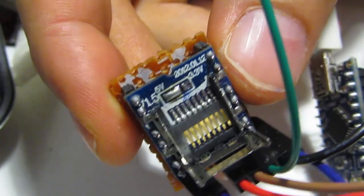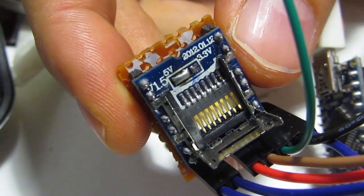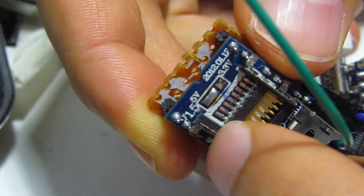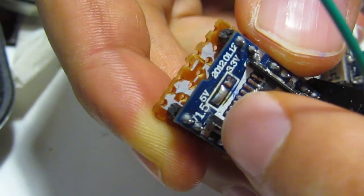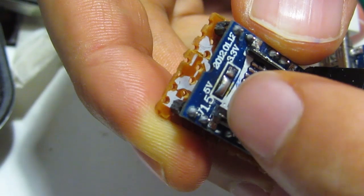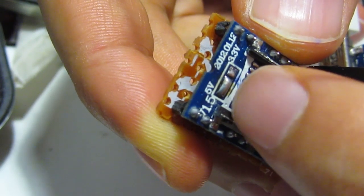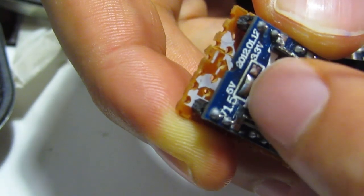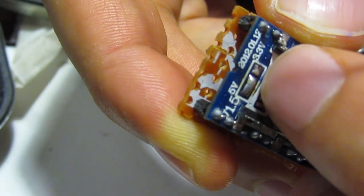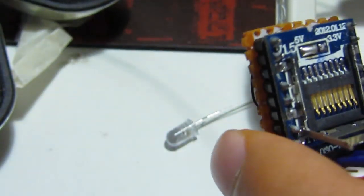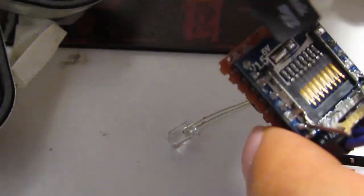This is a cheap soundboard for Arduino. The first mod I made was to change the power from 3.3 volts to 5 volts, so I changed the soldering pin. It supports micro SD cards.